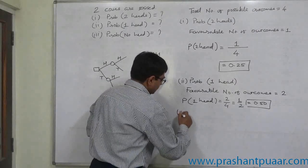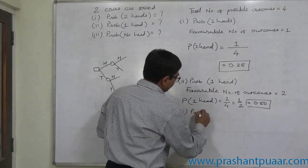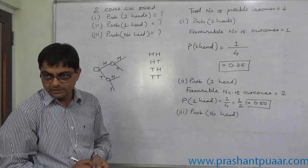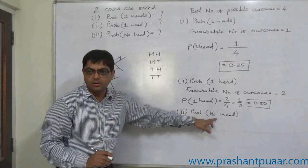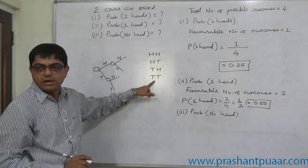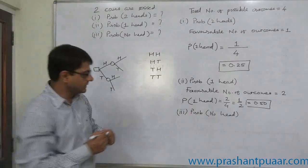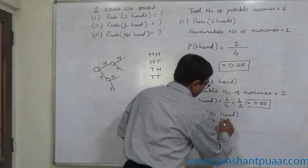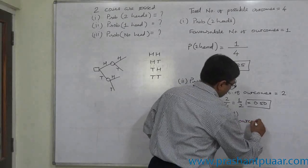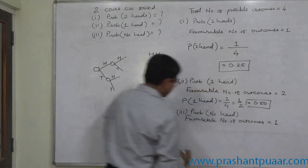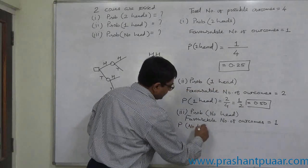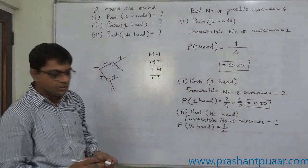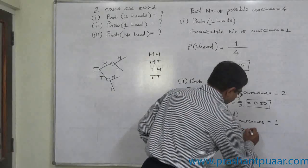Third case is probability of no head. No head occurs in the experiment. The outcome favorable to no head, or zero number of heads, is only one — tail on the first coin and tail on the second coin. So the favorable number of outcomes is only one. Probability of no head comes to one divided by four — favorable cases divided by total number of cases — which is 0.25.